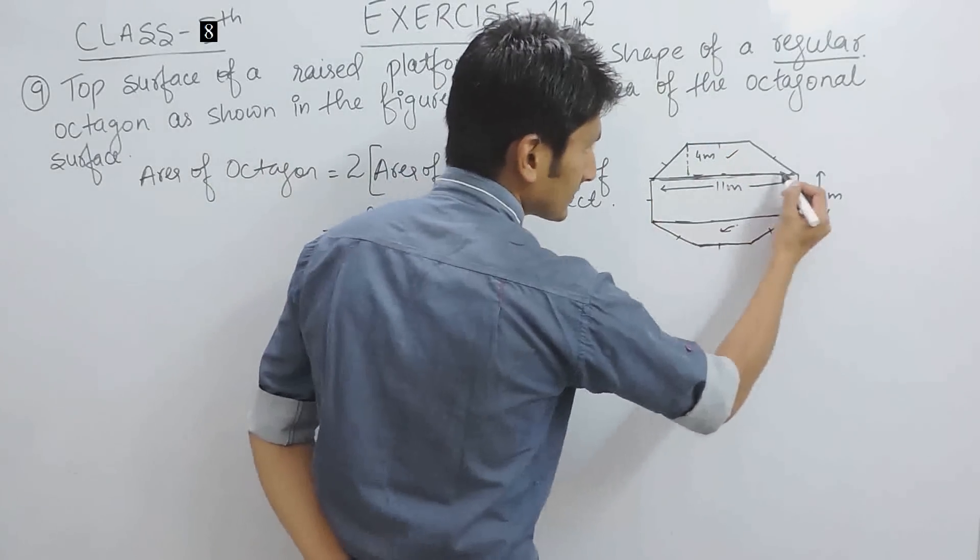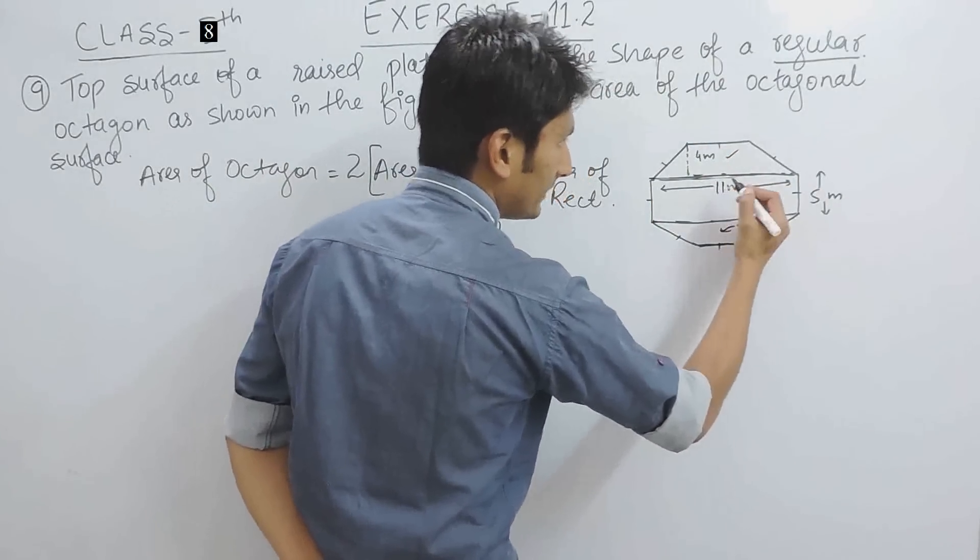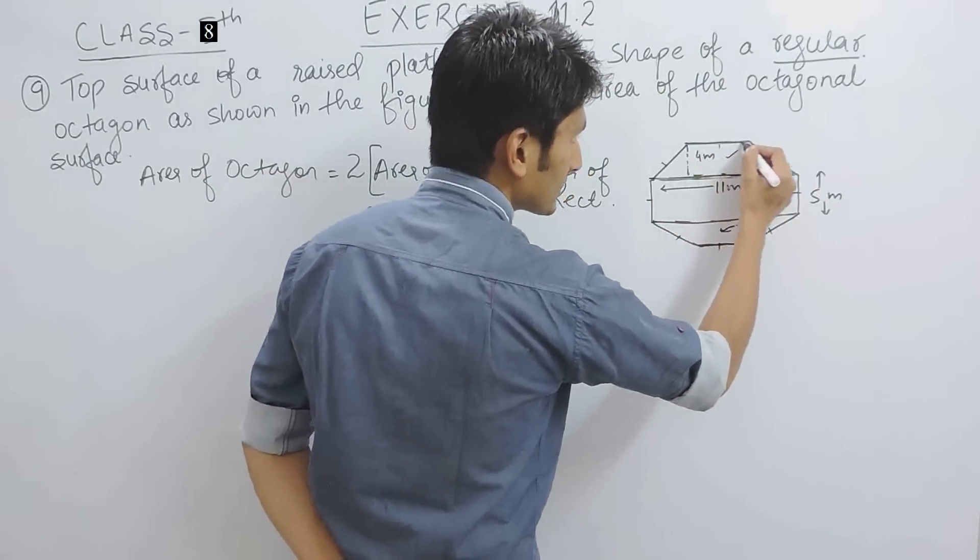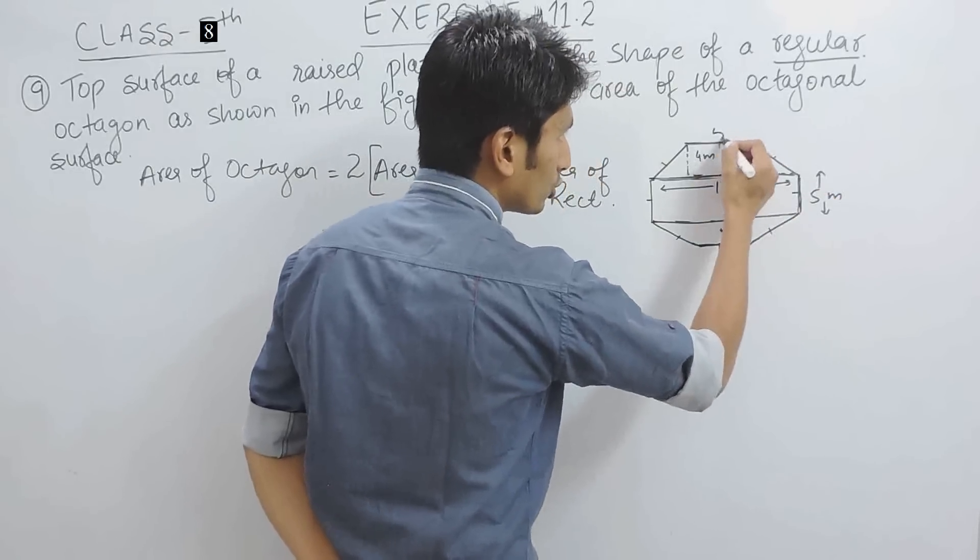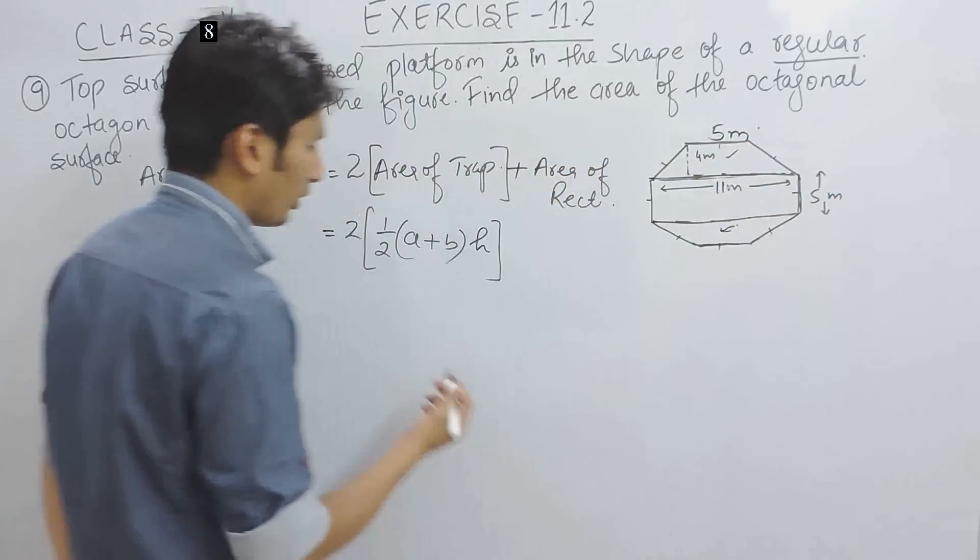We are given this parallel side as 11 meters and because this is the side of the octagon and this side is given as 5, so this should also be 5 meters.